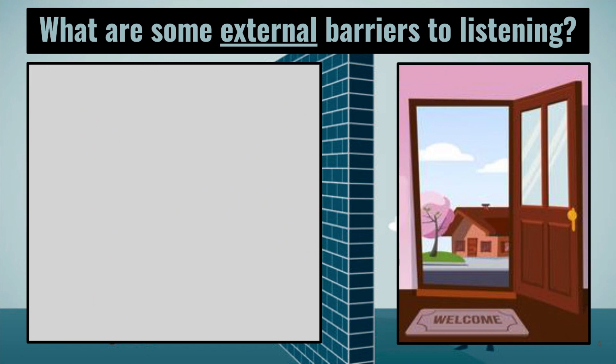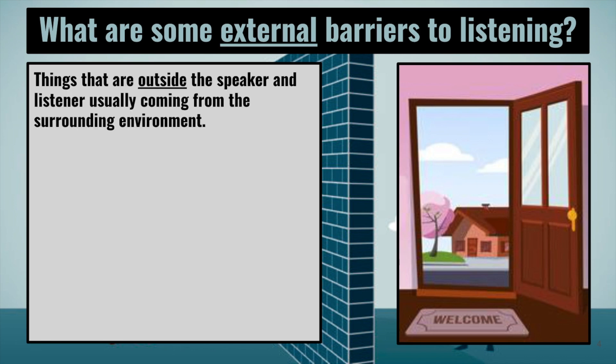Let's first talk about external barriers to listening. What are some things outside of ourselves that are barriers as we try to be good and effective listeners? These are things outside the speaker and listener, usually coming from the surrounding environment — not things that have to do with you personally, but things having to do with your environment that can run interference as you are trying to listen or absorb information.